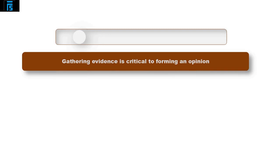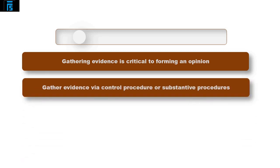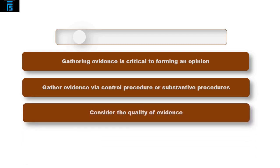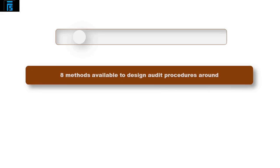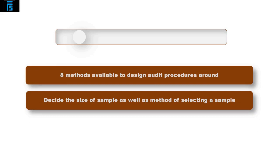Gathering evidence for the audit is critical in forming an opinion. Auditors identify what type of evidence is needed from the objectives — either via control procedures to test whether controls work, or via substantive procedures to test for material misstatements. They must ensure evidence collected is sufficient and appropriate, and there are eight methods available to design their audit procedures around. The auditor must also decide on the size and method of selecting the sample — statistical or non-statistical is acceptable.